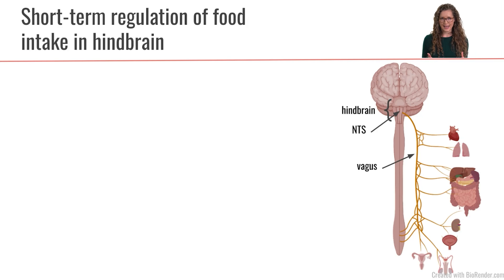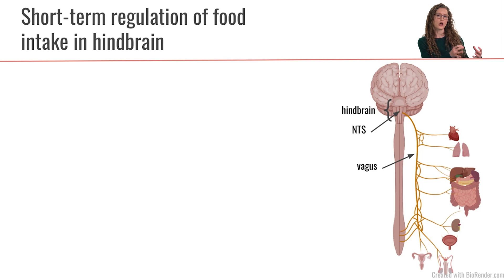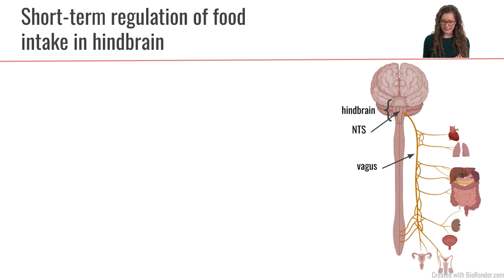When we're talking about food intake, we can divide it into two categories. One category is the short-term regulation of food intake — that's looking at meal to meal. And then there's also longer-term regulation of food intake, which looks at a longer-term measure of our energy stores in our body. First, we're going to talk about short-term regulation of food intake and regulation that happens at the level of the hindbrain.